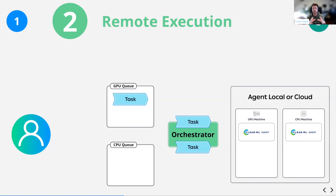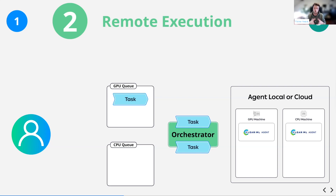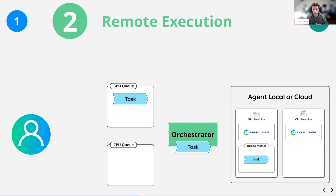You can use the ClearML agent to turn any machine into a worker with basically a single command line command. It can be a cloud machine, a local machine, or your own laptop — it just needs to be running the ClearML agent. You can even run multiple agents on the same machine; for example, with 16 GPUs you could run 16 agents each accessing one GPU, handling 16 tasks in parallel.